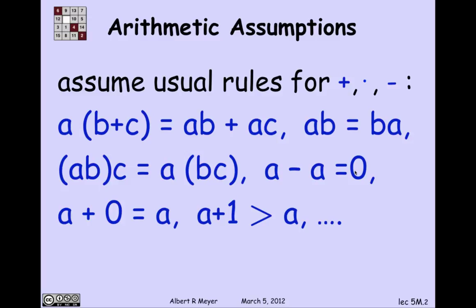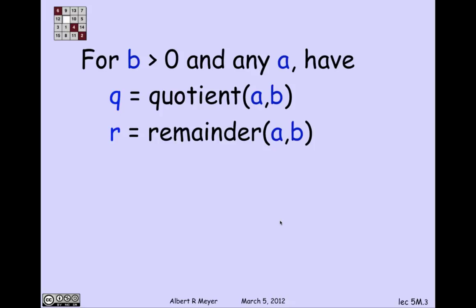This is called associativity of multiplication. This is called the additive identity. A minus A is 0, or actually additive inverse. 0 is the additive identity and minus A is the inverse of A. A plus 0 equals A is the definition of 0 being an additive identity. A plus 1 is greater than A. So these are all standard algebraic facts that we're going to take for granted and not worry about.